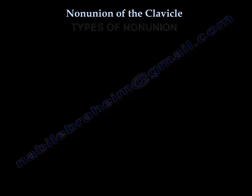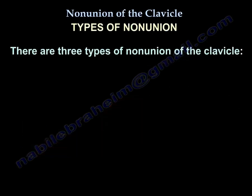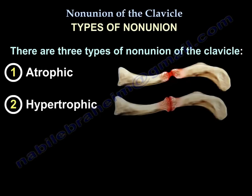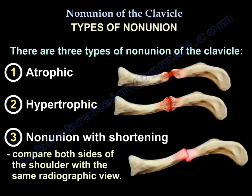The result of surgical treatment of nonunion of the clavicle gives about 90 to 95% good to excellent results. There are three types of nonunion of the clavicle: one is atrophic, two is hypertrophic, and three is nonunion with shortening. You want to compare both sides on the same view.